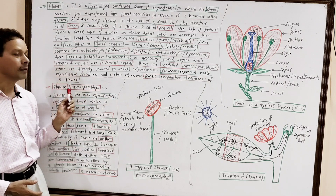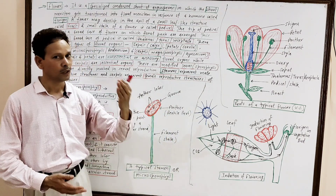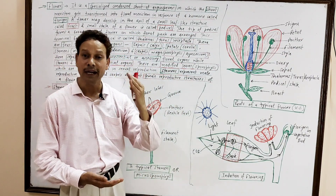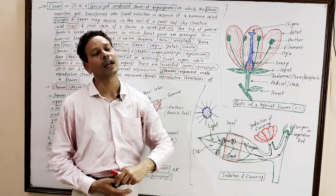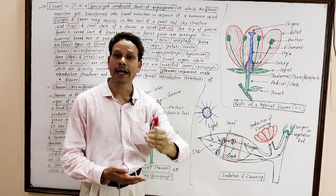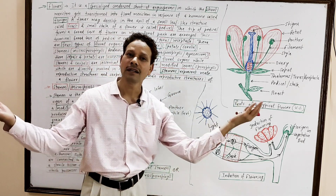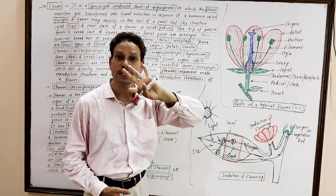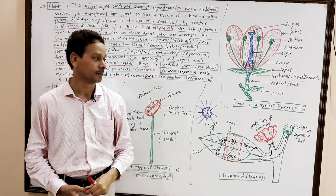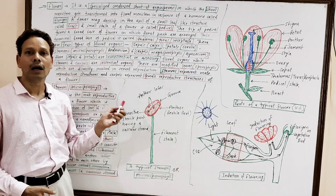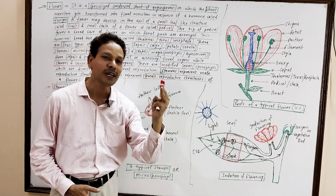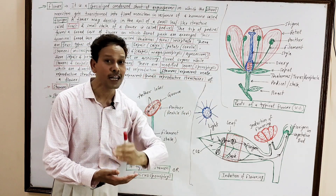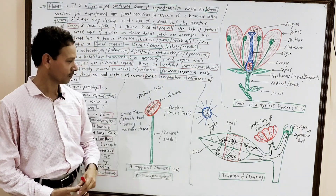First of all, we will discuss stamen, or microsporophyll. Note down: a flower is a modification of stem, and all its floral organs — sepals, petals, stamens, carpels — are modifications of leaves. The stamen, or microsporophyll, is such a type of fertile leaf which produces microspores or pollen grains, and so it is named microsporophyll. Stamen represents the male reproductive organ of a flower.